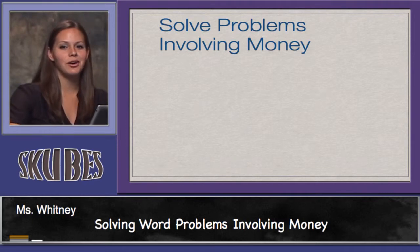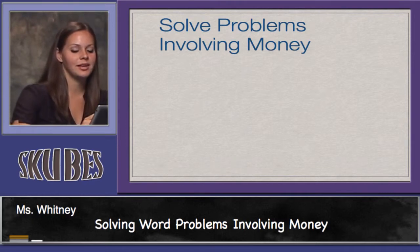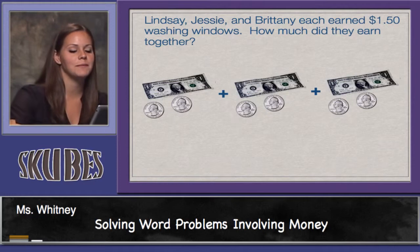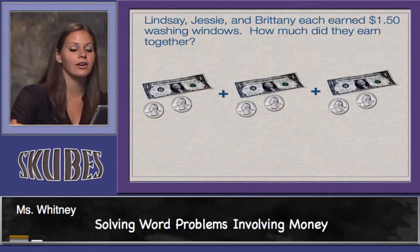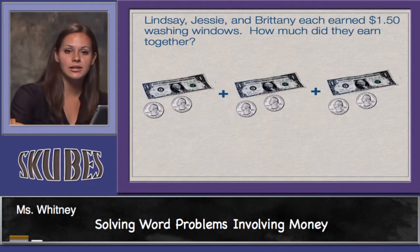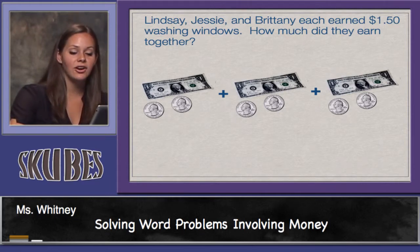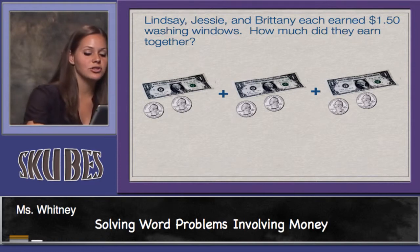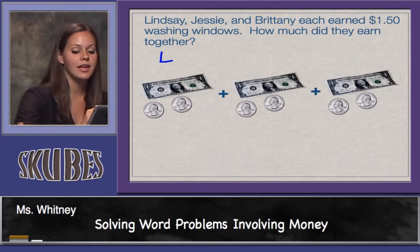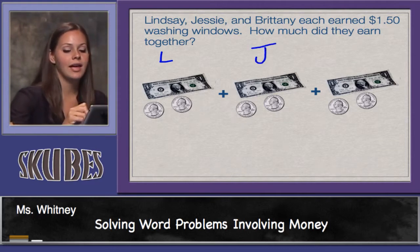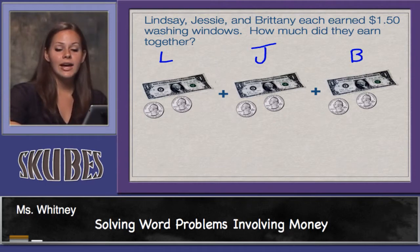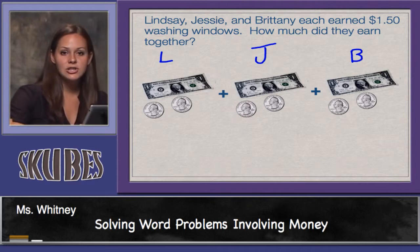Let's solve problems involving money. Take a look at our first problem: Lindsay, Jesse, and Brittany each earned $1.50 washing windows. How much did they earn altogether? My model shows Lindsay earned $1.50, Jesse earned $1.50, and Brittany earned $1.50. To find out how much they earned altogether, we need to add the amounts.